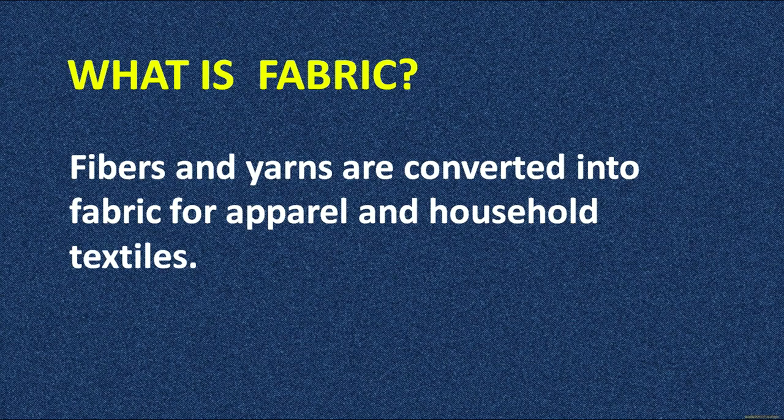Fibers and yarns are converted into fabric for apparel and household textiles. For apparel clothing you have your shirt, pant, suit, saree, skirt, blouses and other things. For household textiles also we use fabric — for upholstery like your sofa cover, you have curtains, dusting clothes at home. We incorporate some sort of technique or differentiation into the construction method itself, by which we convert one fabric into a shirt and another fabric into a curtain.